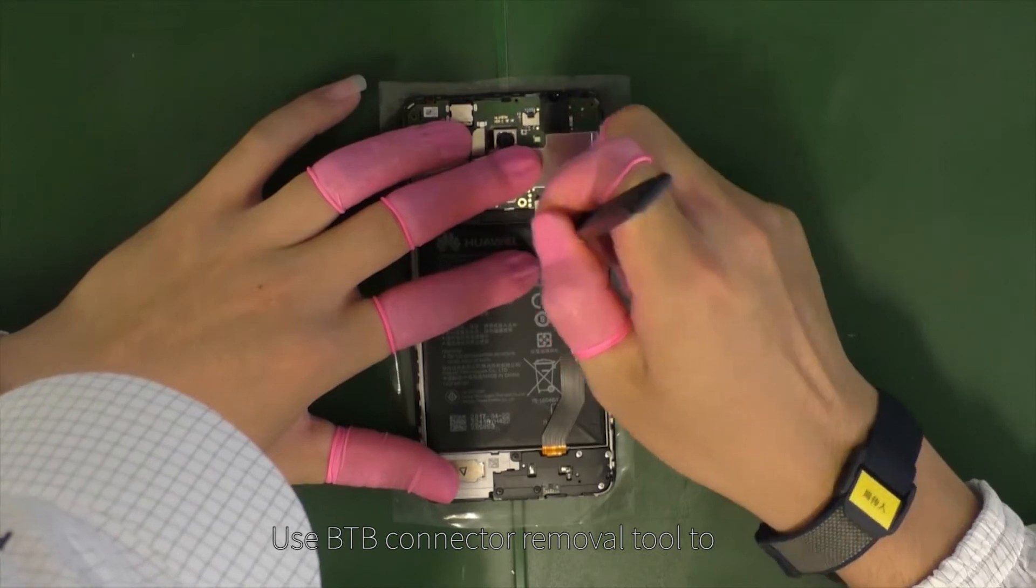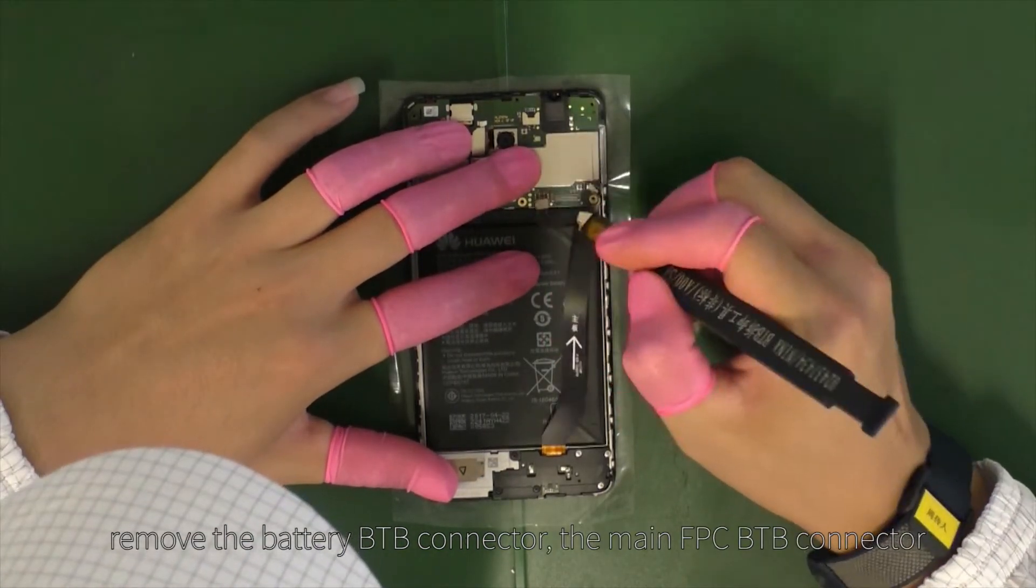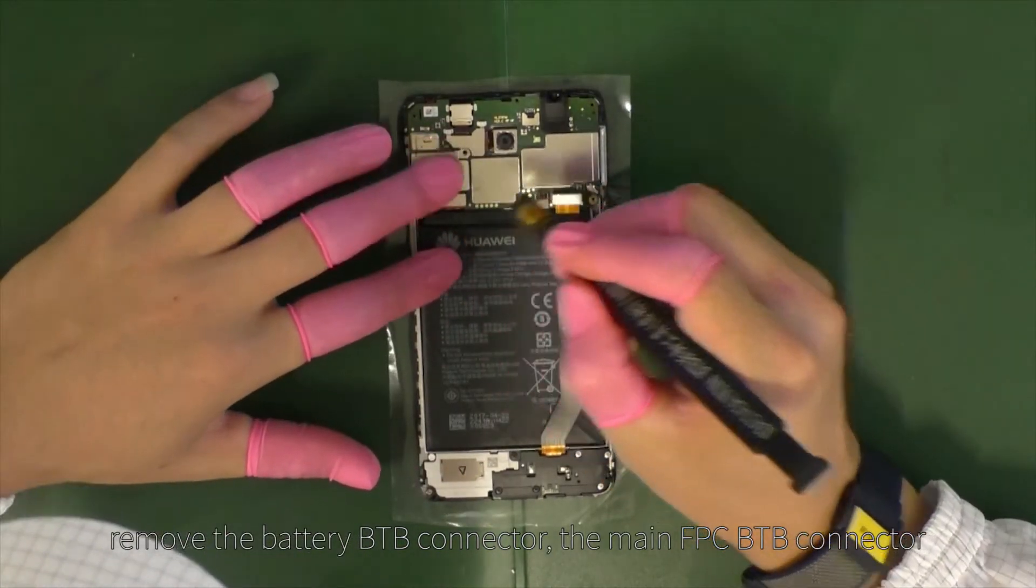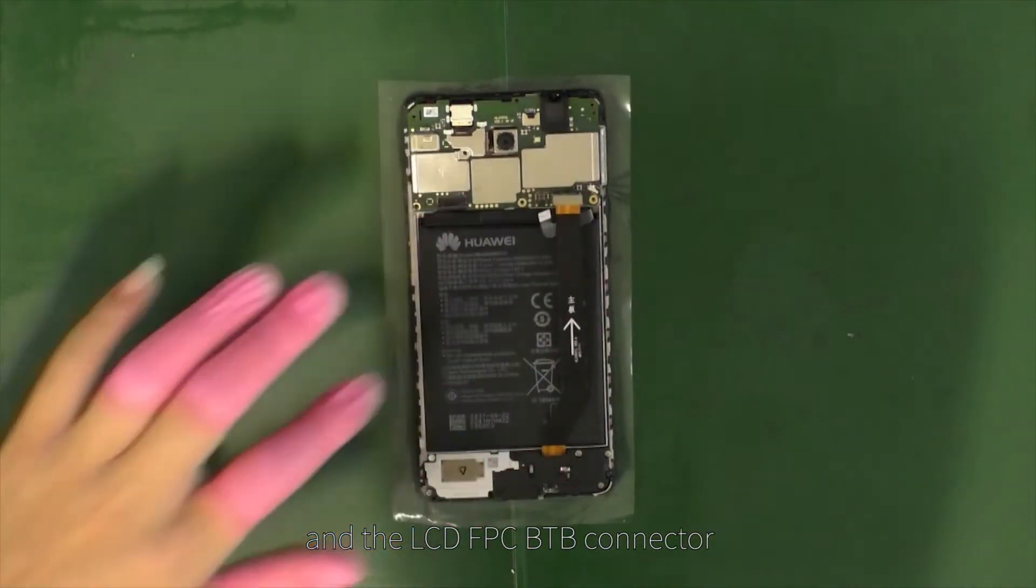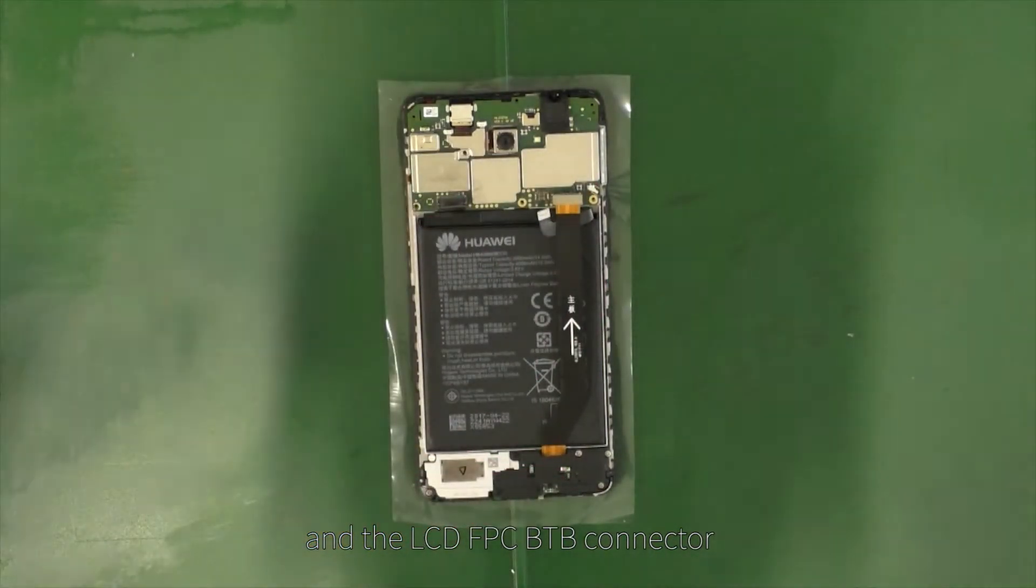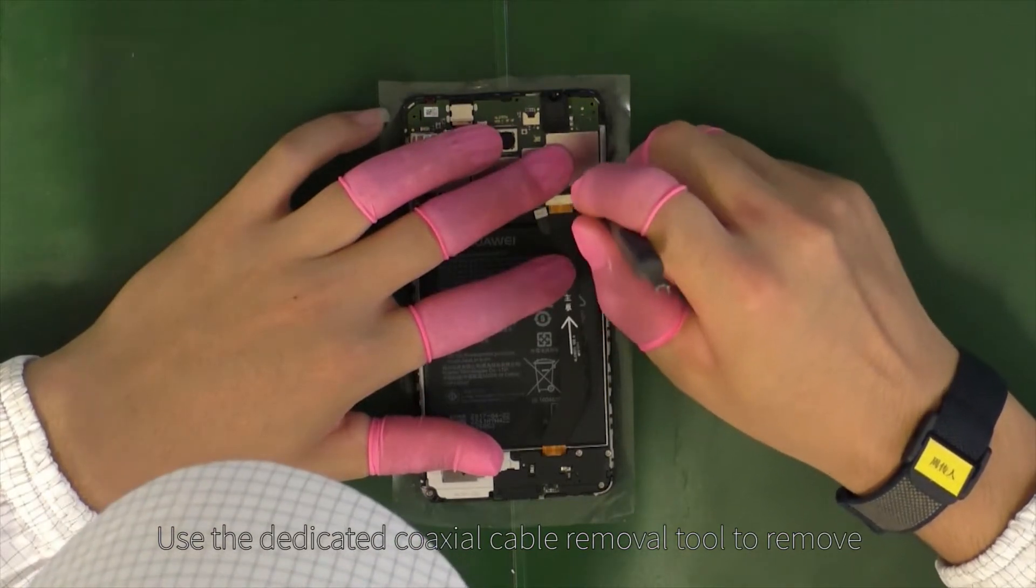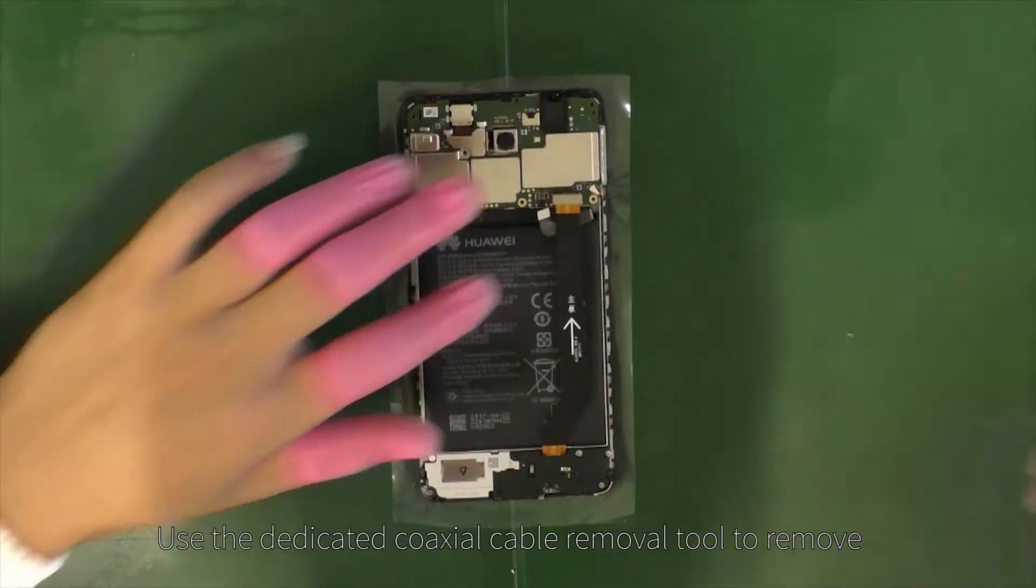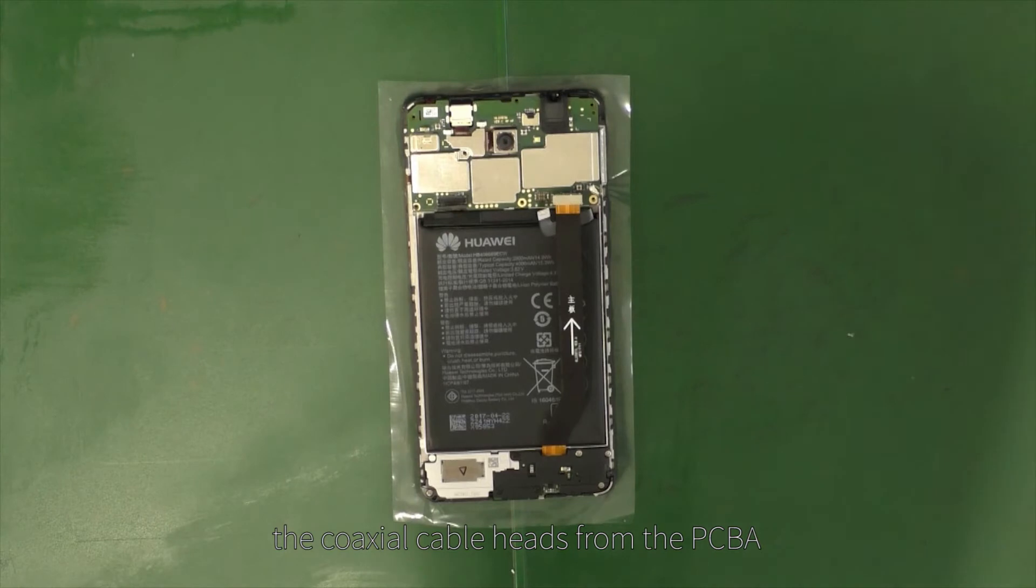Use the B2B connector removal tool to remove the battery B2B connector, the main FPC B2B connector, and the LCD FPC B2B connector. Use the dedicated coaxial cable removal tool to remove the coaxial cable heads from the PCBA.